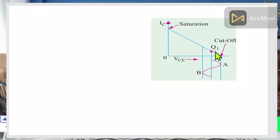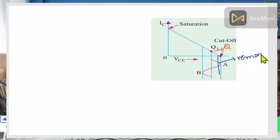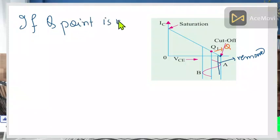Suppose you have drawn the DC load line with IC on the y-axis and VCE on the x-axis, and your Q-point is located near the cutoff. What happens here is that your Q-point — the value of collector current and collector-emitter voltage — is close to the cutoff region. This will cause the signal to clip at point A, the positive peak.